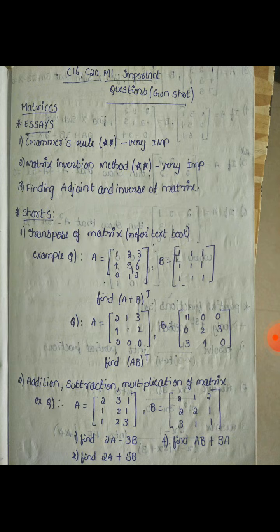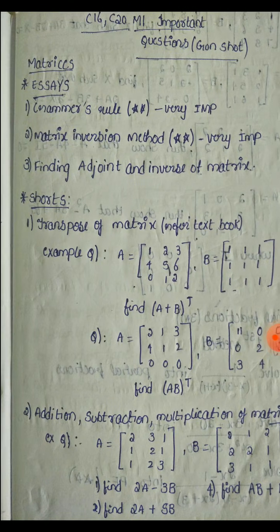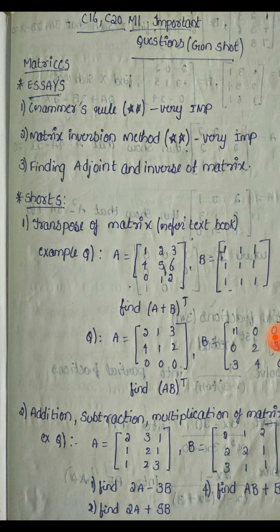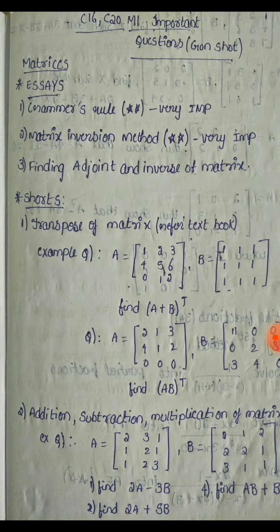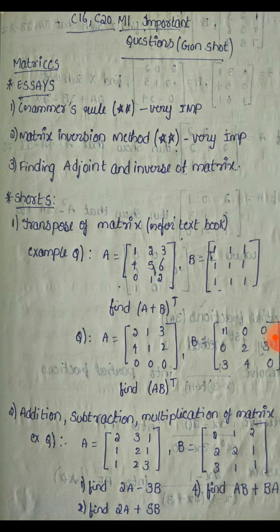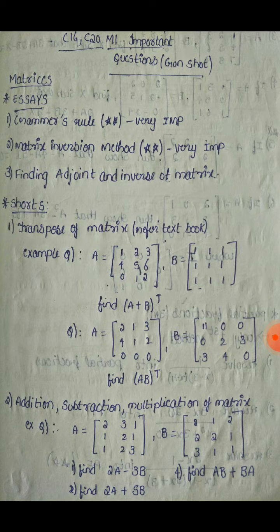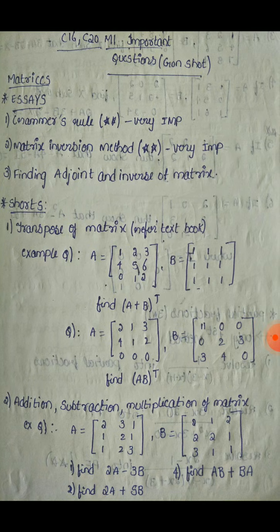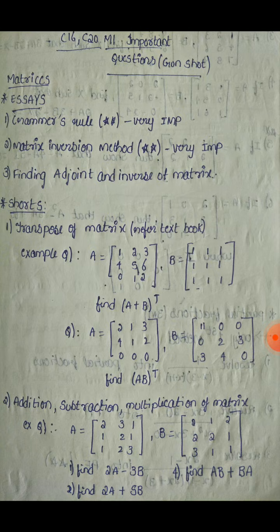Matrices are very, very important for C20 and C16 students. For essay questions, finding the adjoint and inverse of a matrix is key. The Cramer's rule and matrix inversion method are very important. For short answer questions, understand the process of Cramer's rule and find it in the textbook.